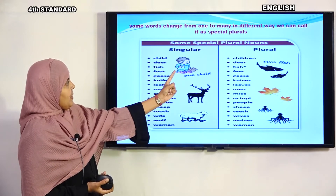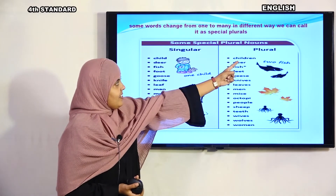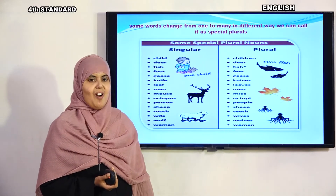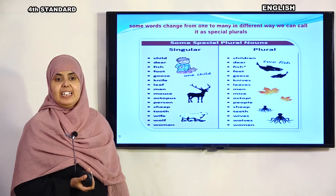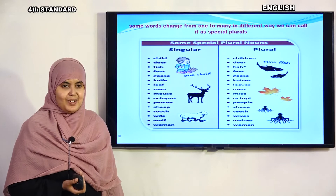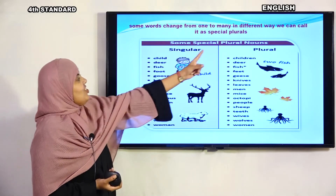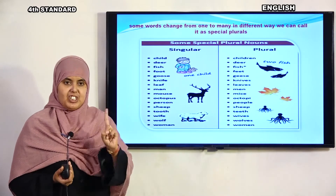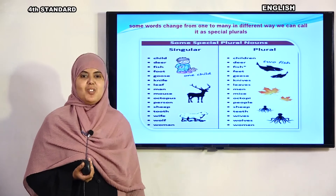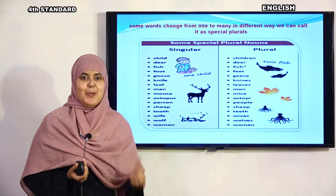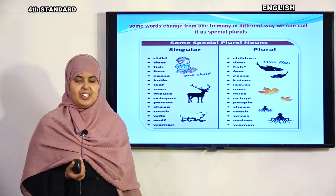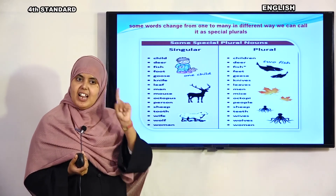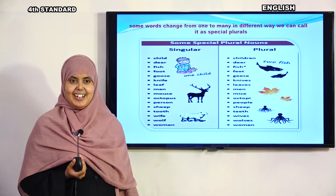Child — children. We do not add 's' to say 'childs'. The plural of child is children. You are all children — you are in plural form! Child is singular — one bachcha. Children is plural — more than one.